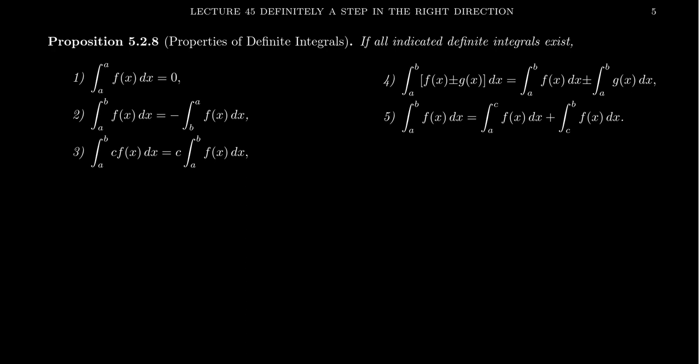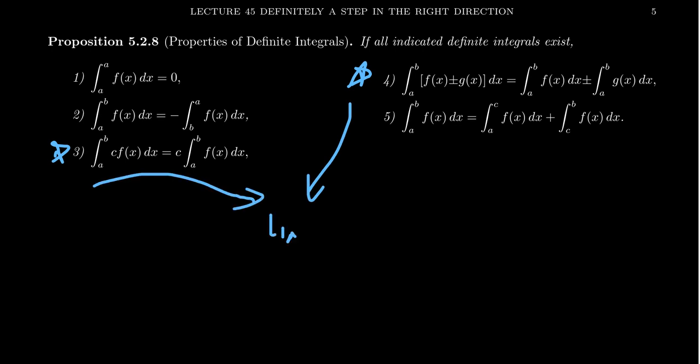Properties three and four you may already recognize. Property three says that if there's a scalar inside of the integral, you can factor it out to the outside. Property four says that if you add two functions inside the integral, this is the same as adding the integrals separately — or taking their difference. Putting these two principles together gives us linearity: the definite integral is a linear operation. So is the indefinite integral, antiderivatives, sigma, limits, and derivatives — there are so many linear operations in calculus. I recommend taking a course in linear algebra to explore this idea more deeply.